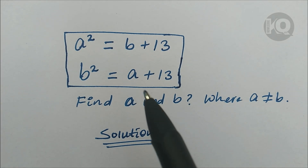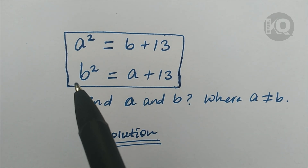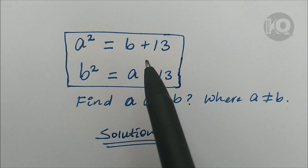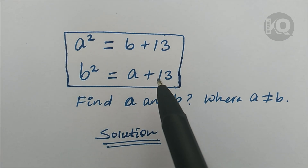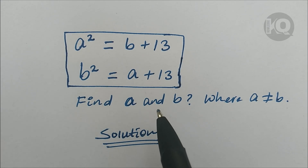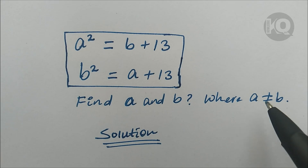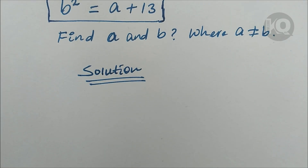Hello, you are welcome to solve another math problem. We have a squared equal to b plus 13, and b squared equal to a plus 13. Find the value of a and b, with the initial condition that a must be different from b. Let's go to the solution.